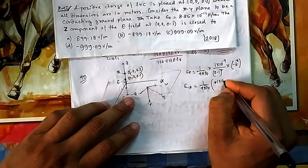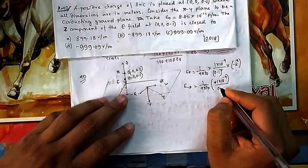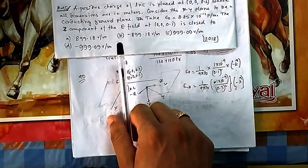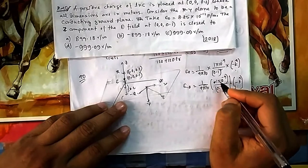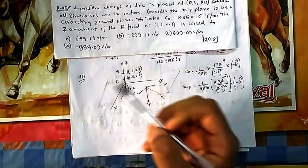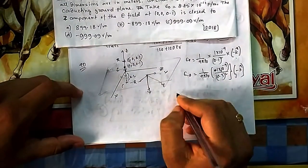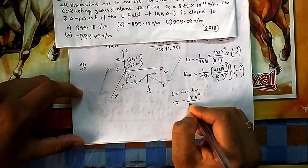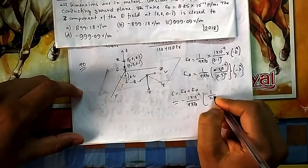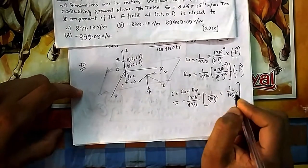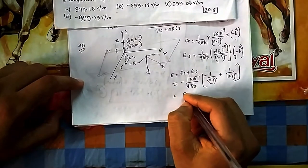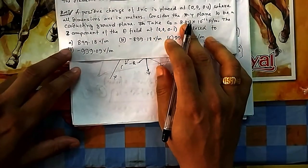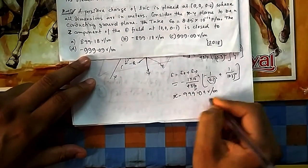Computing: E due to real charge q = (1/(4πε₀)) × (1×10⁻⁹) / (0.1)² in the −k̂ direction. E due to image charge −q: magnitude (1/(4πε₀)) × (1×10⁻⁹) / (0.3)² also in −k̂ direction. Summing both z-components: (−1×10⁻⁹ / 4πε₀) × [1/(0.1²) + 1/(0.3²)]. Using ε₀ = 8.85×10⁻¹², the result is approximately −999 V/m with a negative sign.